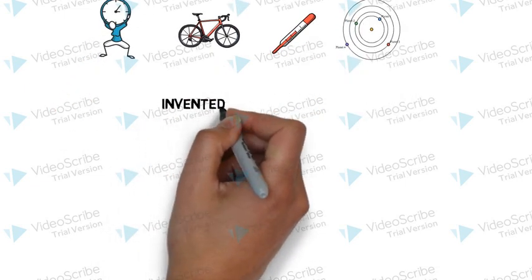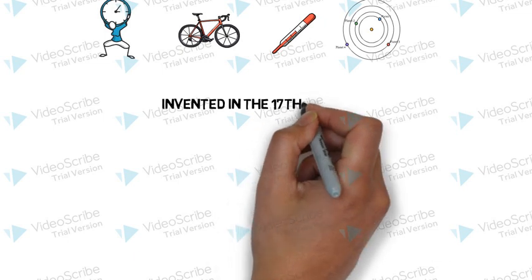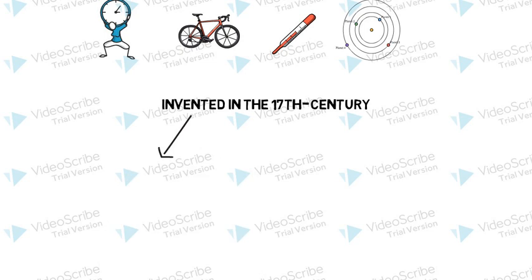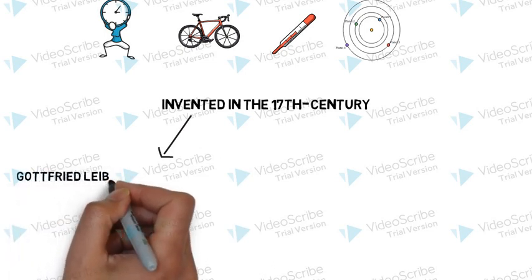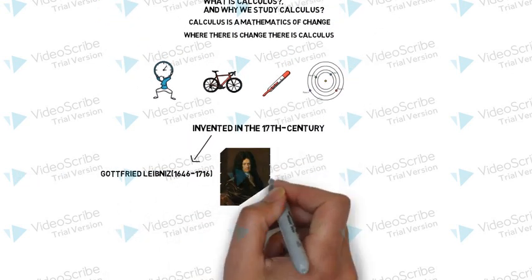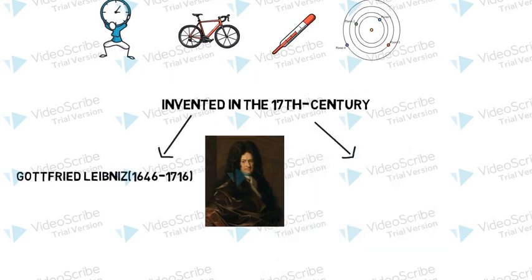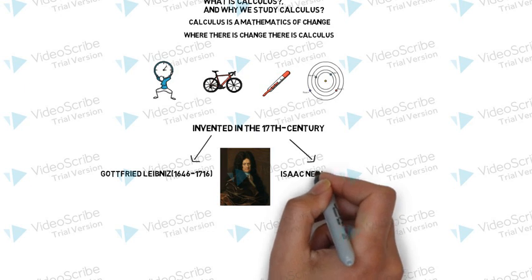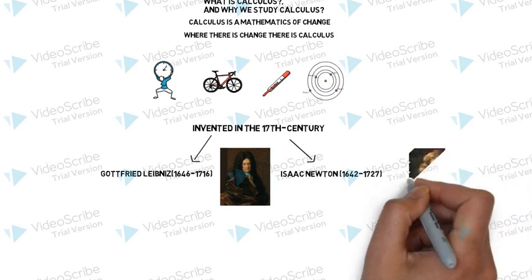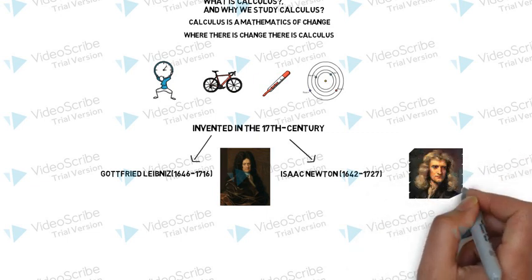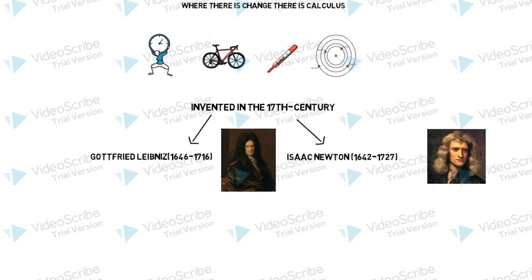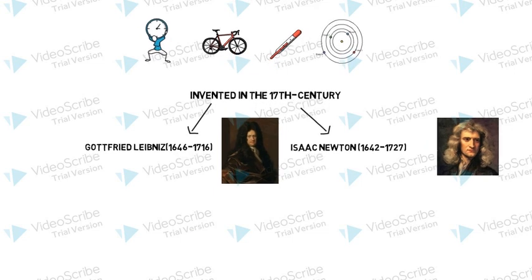Calculus was developed in the 17th century to investigate problems that involve motion. There were two famous mathematicians. One was Gottfried Leibniz, who lived between 1646 to 1716, and the other one was Isaac Newton, who lived between 1642 to 1727. Both independently developed calculus. Leibniz was from Germany whereas Isaac Newton was an English mathematician.